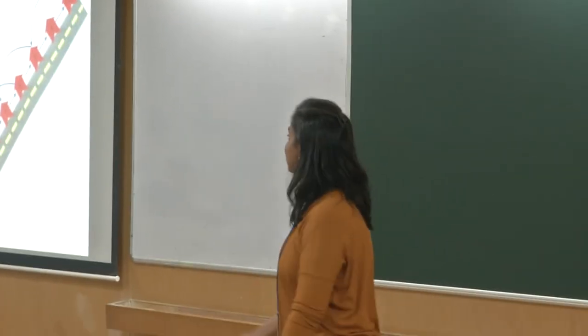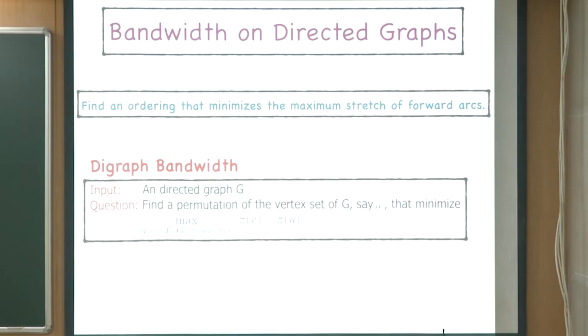This is what we want to encapsulate, and it can be captured in the digraph bandwidth problem. We've lifted the bandwidth problem from undirected to directed graphs. Given a directed graph G, the goal is to find a permutation of the vertex set that minimizes the stretch of only the forward arcs — the arcs whose tail appears before their head in the ordering.